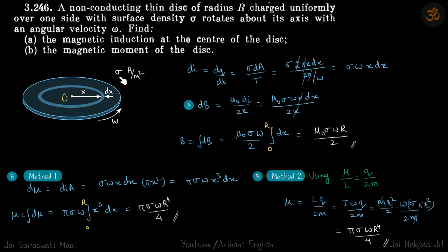It is given surface charge density is sigma. Because the disk is rotating, the charge is rotating and will generate a current. That generated current will generate a field at the center and will also create a magnetic moment.